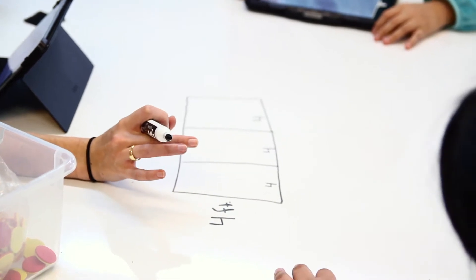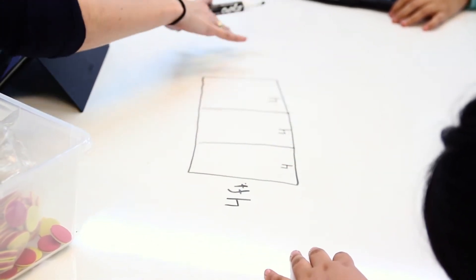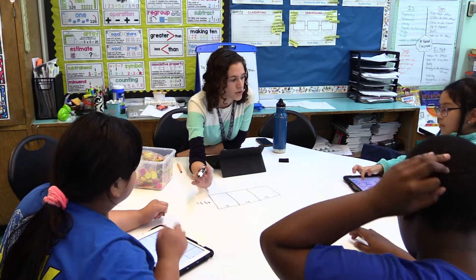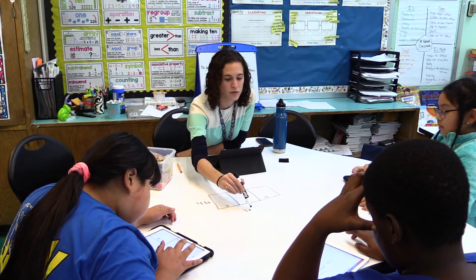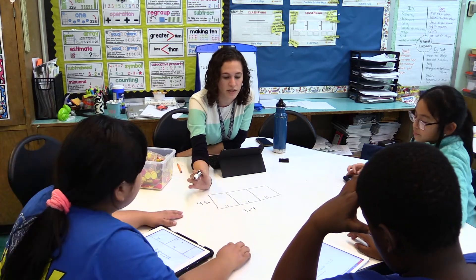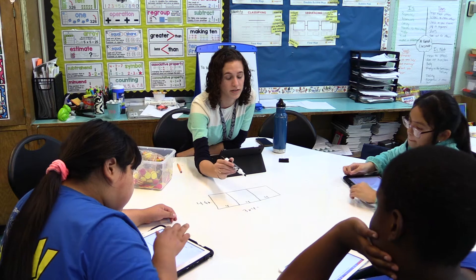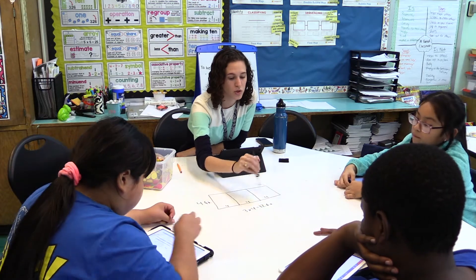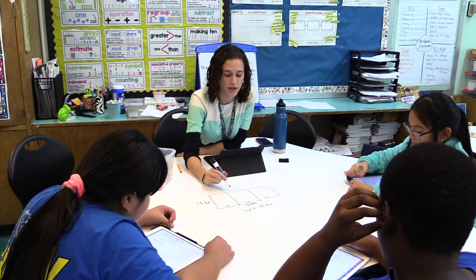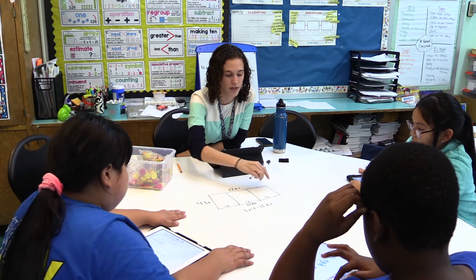Good job! Could you write a multiplication sentence to show how you're going to find your width? You can write it underneath or at the side — it doesn't matter. I can see that Maria wrote three times four and Rafan wrote four times three — it's the same thing. That would get us an answer of 12. What's our measurement? 12 feet! So what is our width? 12 feet.